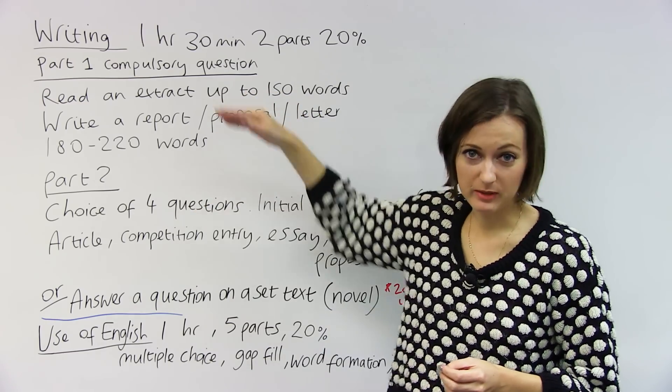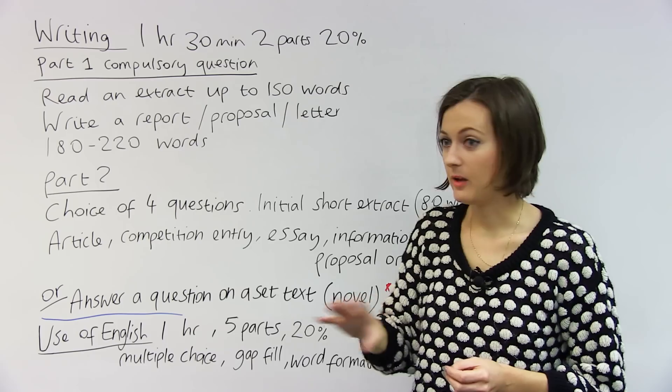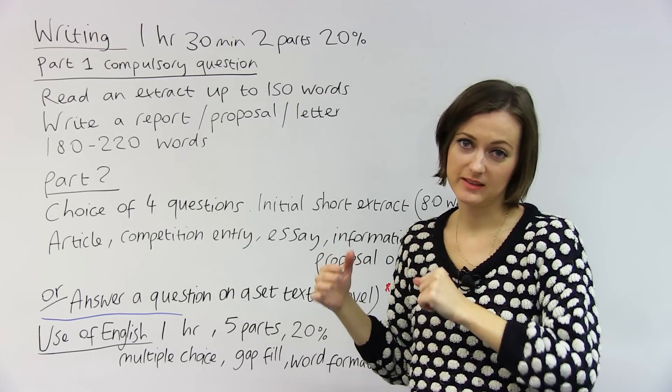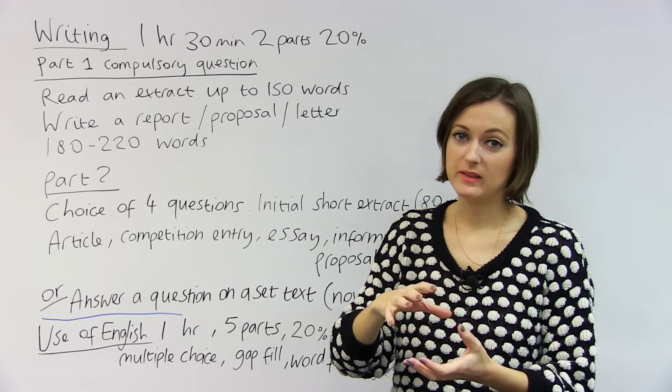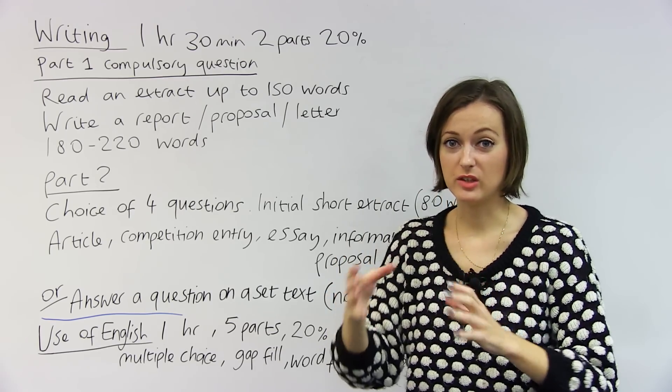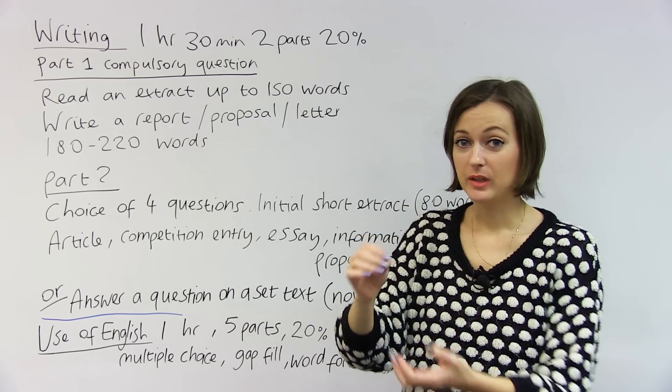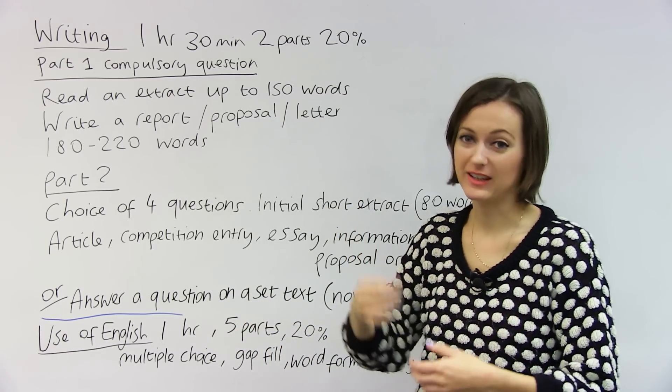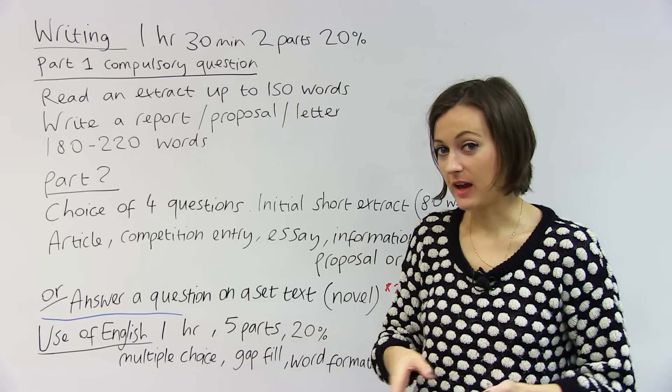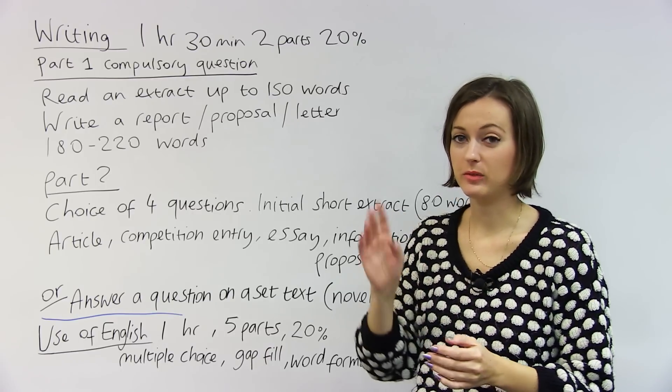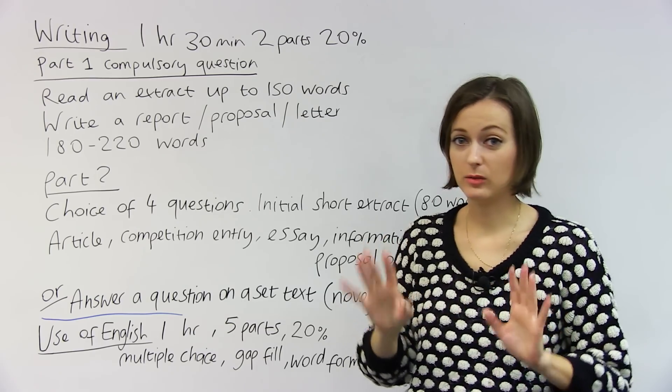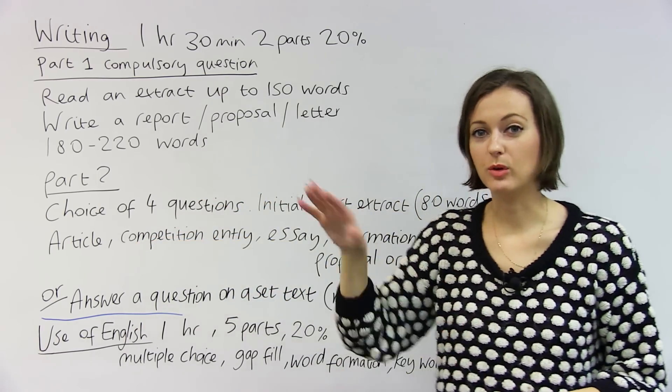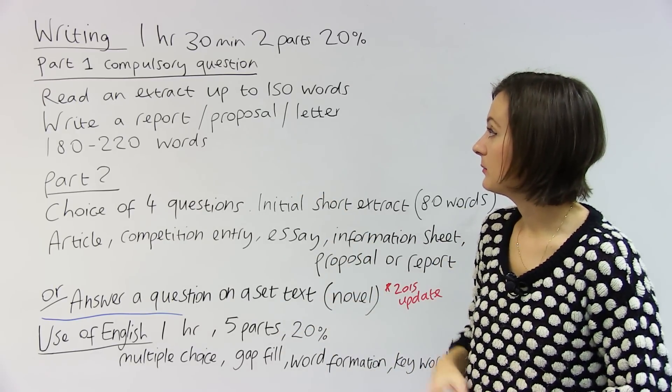So you can do two similar questions, or your choice is another option, which is answering a question on a set text. So this is something that happens in the CAE exam. There'll be set texts, which basically means like a novel or some literature that you can read before and get to know that text before. And then in the exam, you can answer a question on that. So this is the kind of question that we get in English schools more, like in an English-English exam. So you could choose to do that, but you only have the choice to do that up until the exam change in 2015, because after that, they're not going to do that anymore. Then you'll just have to make a choice for this part where it's article or competition entry, something like that.